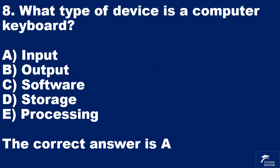Question 9. What type of device is a computer keyboard? A: input. B: output. C: software. D: storage. E: processing. The correct answer is A.